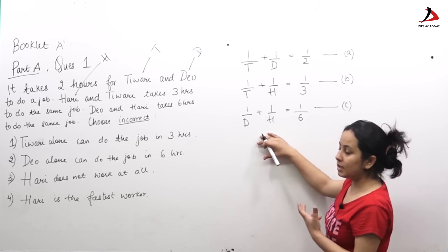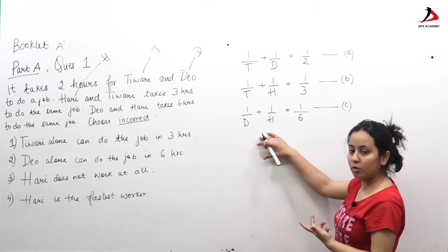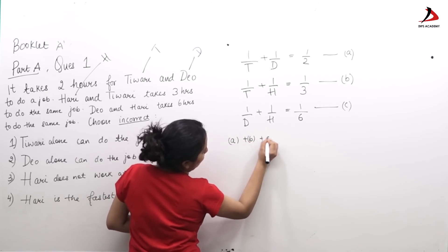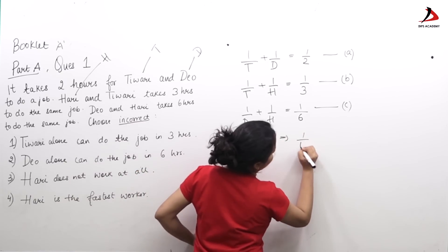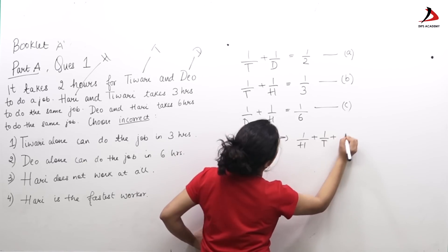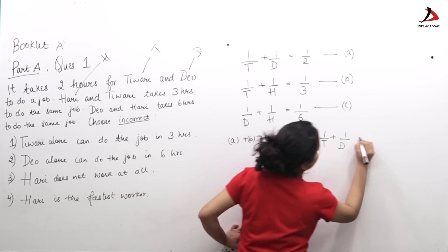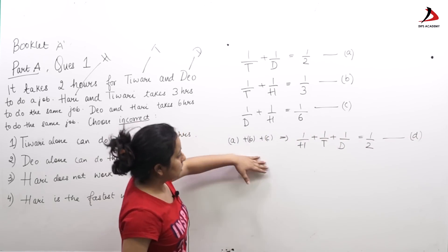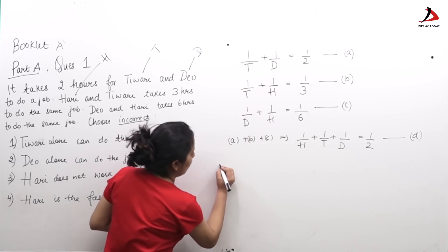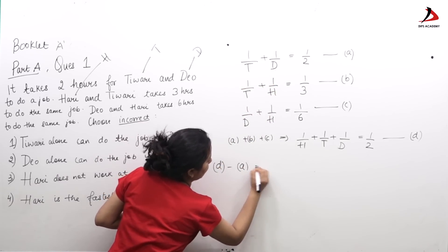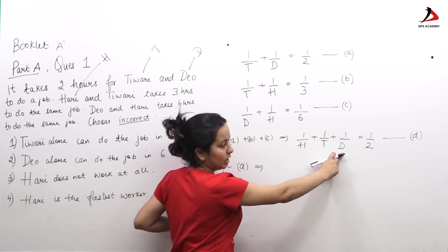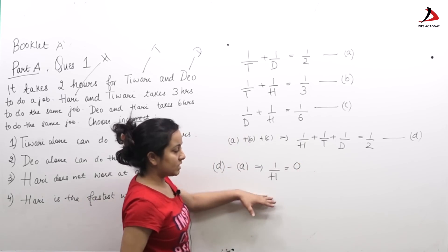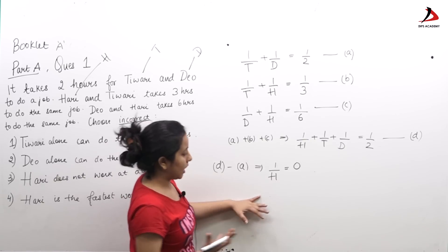I will use these equations to find the time Hari, Dio, and Tiwari each take to do the job alone. Adding equations A, B, and C gives: 1/H + 1/T + 1/D = 1/2. I will name this equation D. Subtracting equation A from equation D, the 1/T and 1/D terms cancel out, leaving 1/H = 0, which means Hari does no work at all.